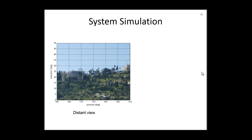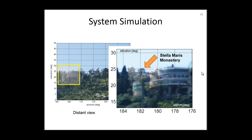Before experiments, I present a full system simulation. This is our distant view. We look at this region of the scene. This here is the Stella Maris monastery seen from the Haifa Bat Galim beach. We are going to distort it.